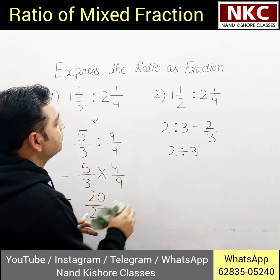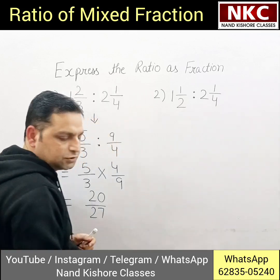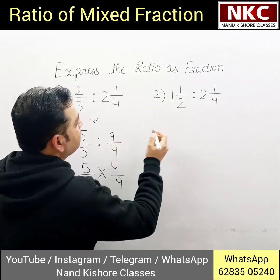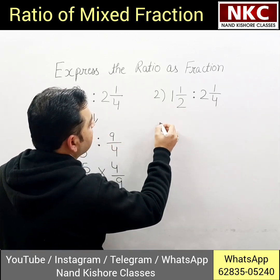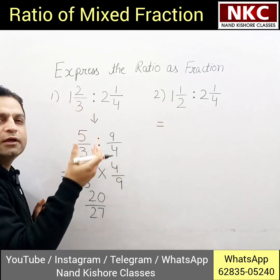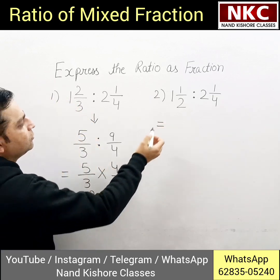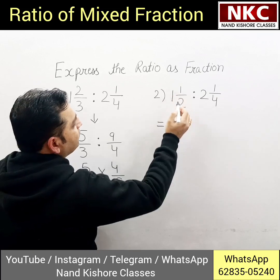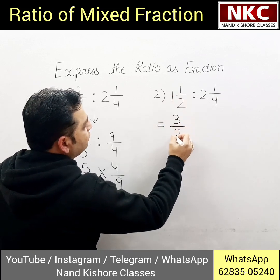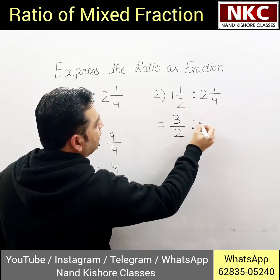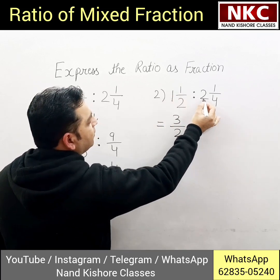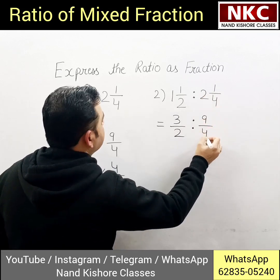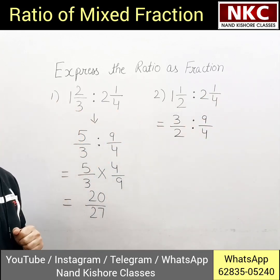Now the second question. Let us do the second question as well. Firstly, mixed fraction is there — let us convert it into an improper fraction. 2 multiply 1 is 2, and 2 plus 1 is 3, so this is 3 upon 2. And 4 multiplied by 2 is 8, and 8 plus 1 is 9 — it is the same as before: 9 by 4.